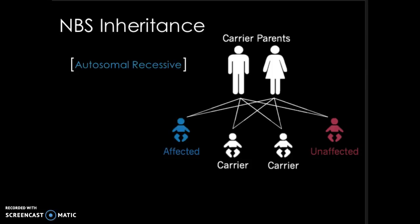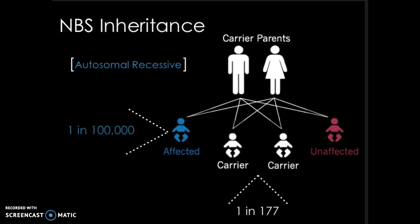NBS is an inherited disorder. It is autosomal recessive, meaning that it requires both parents to pass on their mutated alleles to the offspring. Because those affected are typically infertile, the disease is most always passed on from two unaffected carriers. Each of these parents possesses only one mutated NBN gene, giving a 25% chance to pass it on to their child. NBS affects 1 in 100,000 infants, yet 1 in 177 people are carriers of the disease.